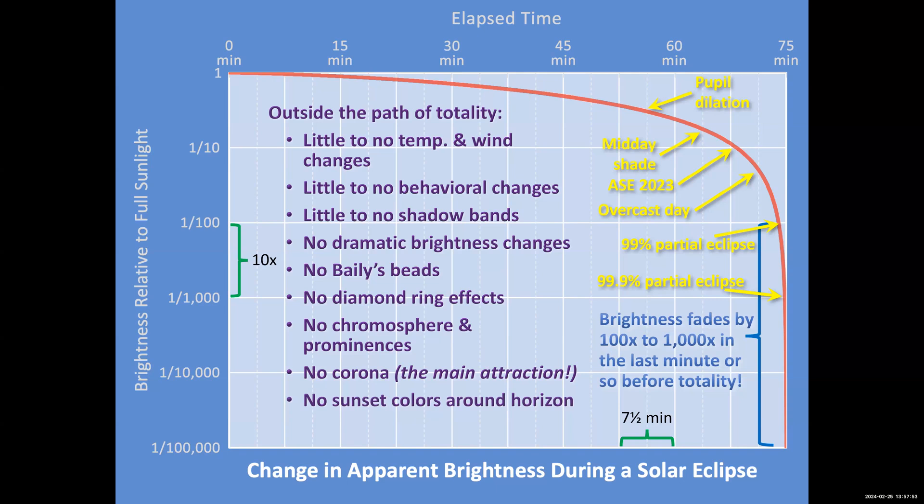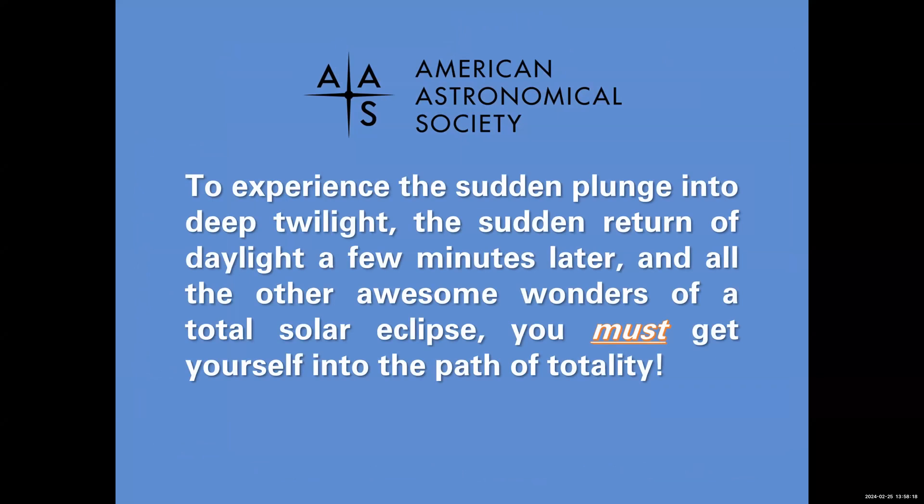It doesn't get dark enough for you to see the sunset colors around the horizon during totality. And you will not see stars and planets. During totality, you should be able to see Jupiter and Venus at the very least, and maybe some of the fainter planets depending on how dark it gets, but at 99.9% you will not see them. So finally, to experience the sudden plunge into deep twilight, the sudden return of daylight a few minutes later, and all the other awesome wonders of a total solar eclipse, you must get yourself into the path of totality.